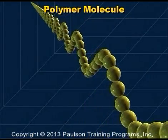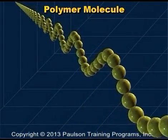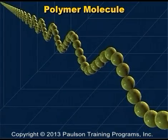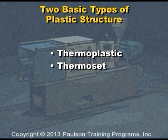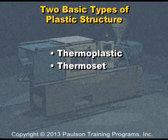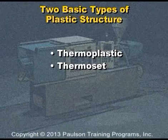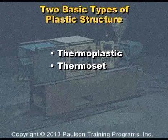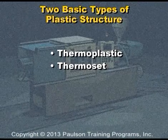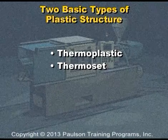Our graphics show molecules millions of times larger than they really are. Now let's look at the two basic types of plastic structure: thermoplastic and thermoset.